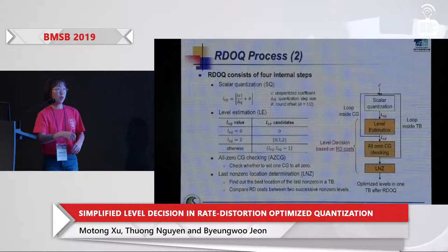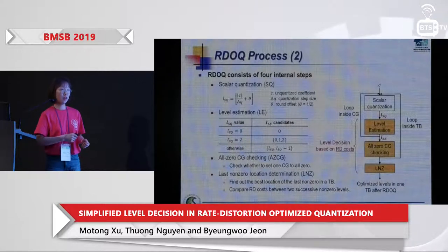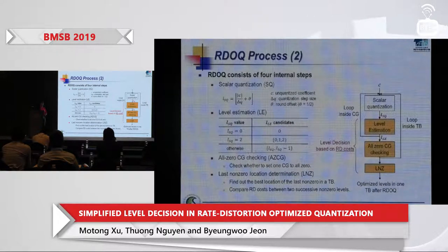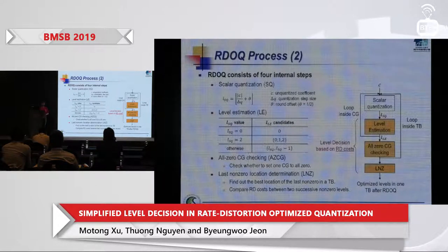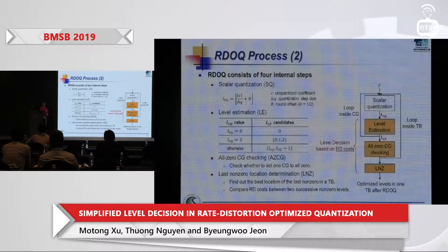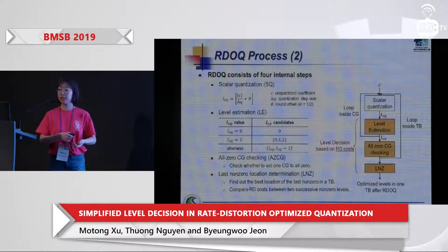Level estimation is processed looping inside each CG. After all levels are estimated inside one CG, it goes to the all-zero CG checking step, which decides whether to set one CG to all-zero or not. After all CGs are checked inside a transform block, the whole block goes to the last non-zero location determination (LNZ) step, which finds the best location for the last non-zero coefficient by comparing RD costs between two successive non-zero coefficients following the reverse scan pattern.